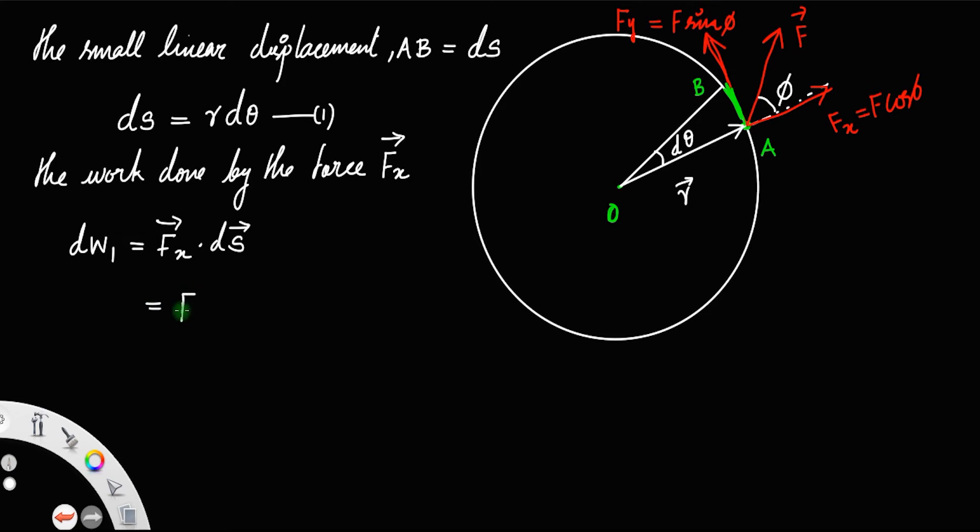But you know, Fx ds, since Fx is perpendicular to the displacement, this angle is 90 degrees. We have A dot B equal to AB cos theta. Similarly, F dot ds equals F ds cos 90. Since cos 90 is equal to 0, the entire term will be 0.